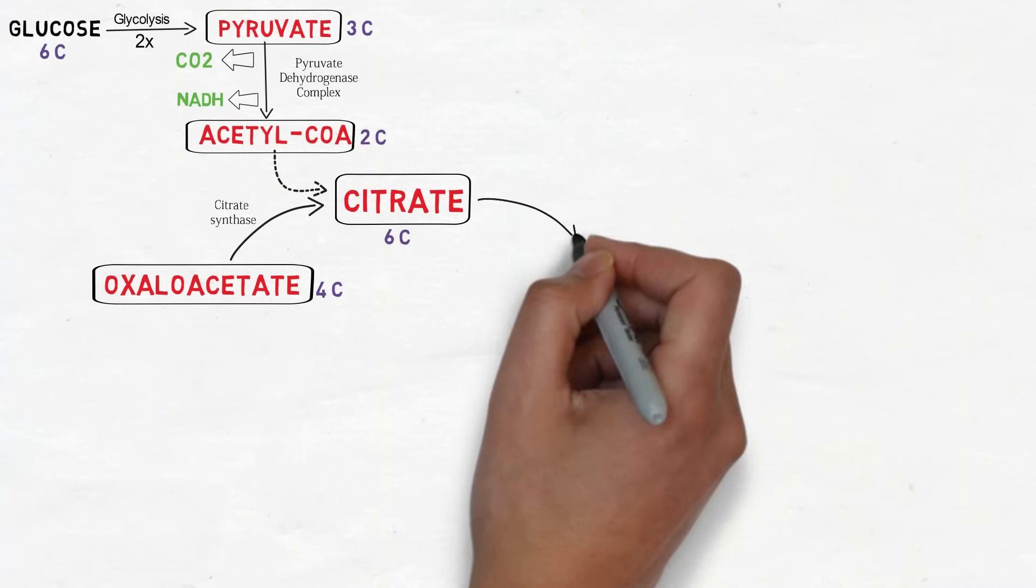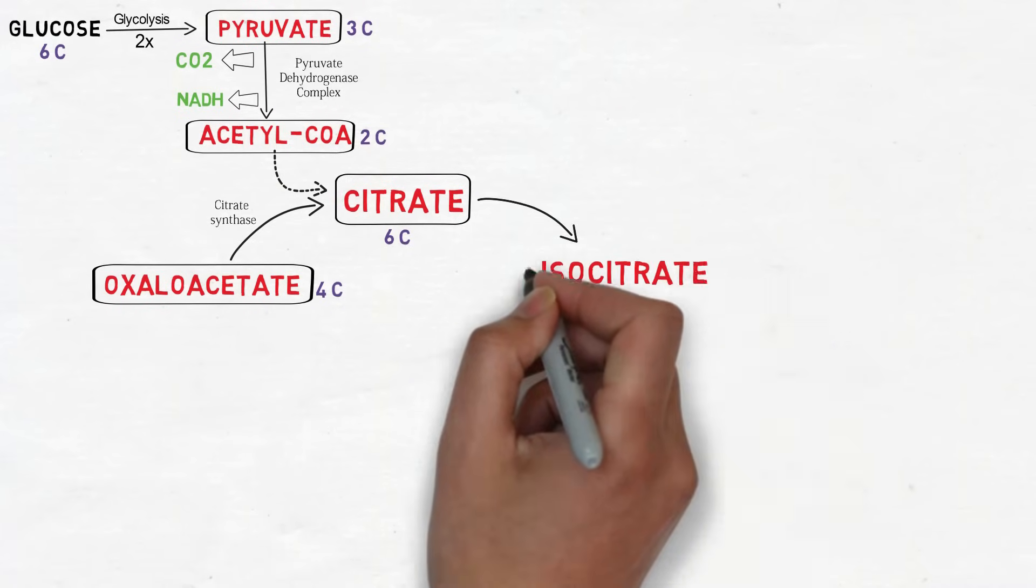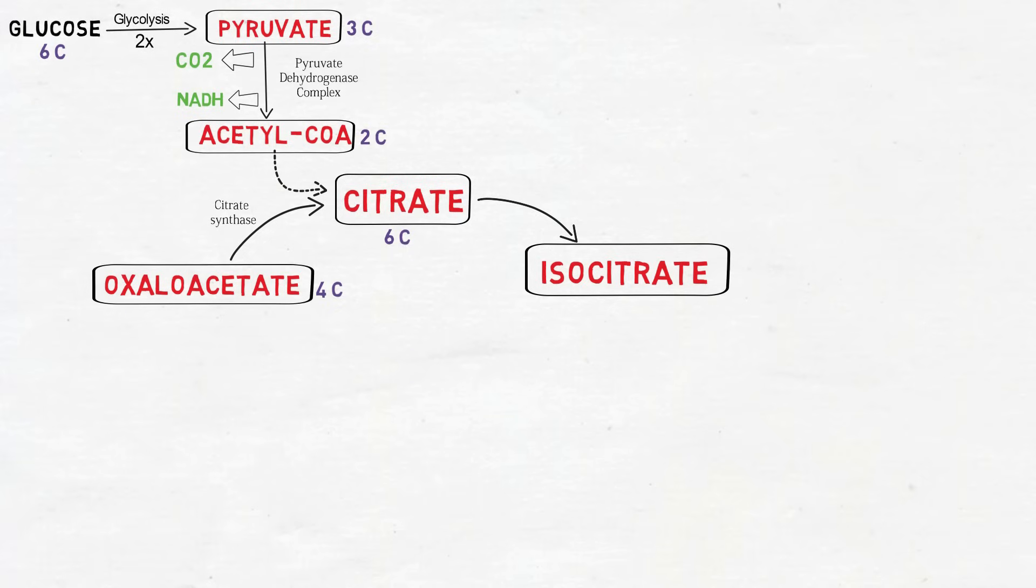In the next step the citrate is isomerized into isocitrate by the enzyme aconitase.